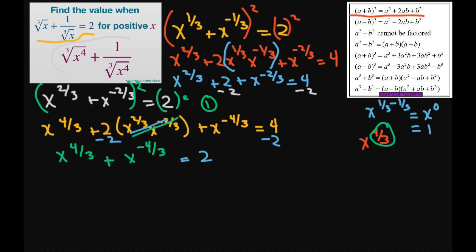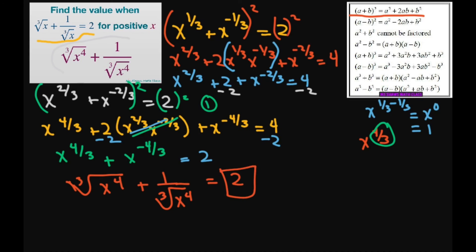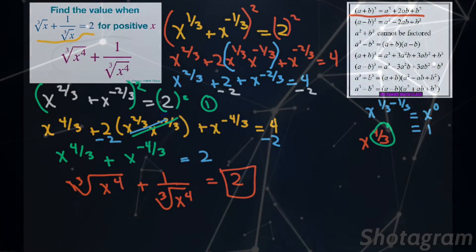Rewriting this back in radical form, we get cube root of x to the power of 4 plus 1 divided by cube root of x to the 4th power equals 2. So 2 is your value. Thank you, have a nice day!